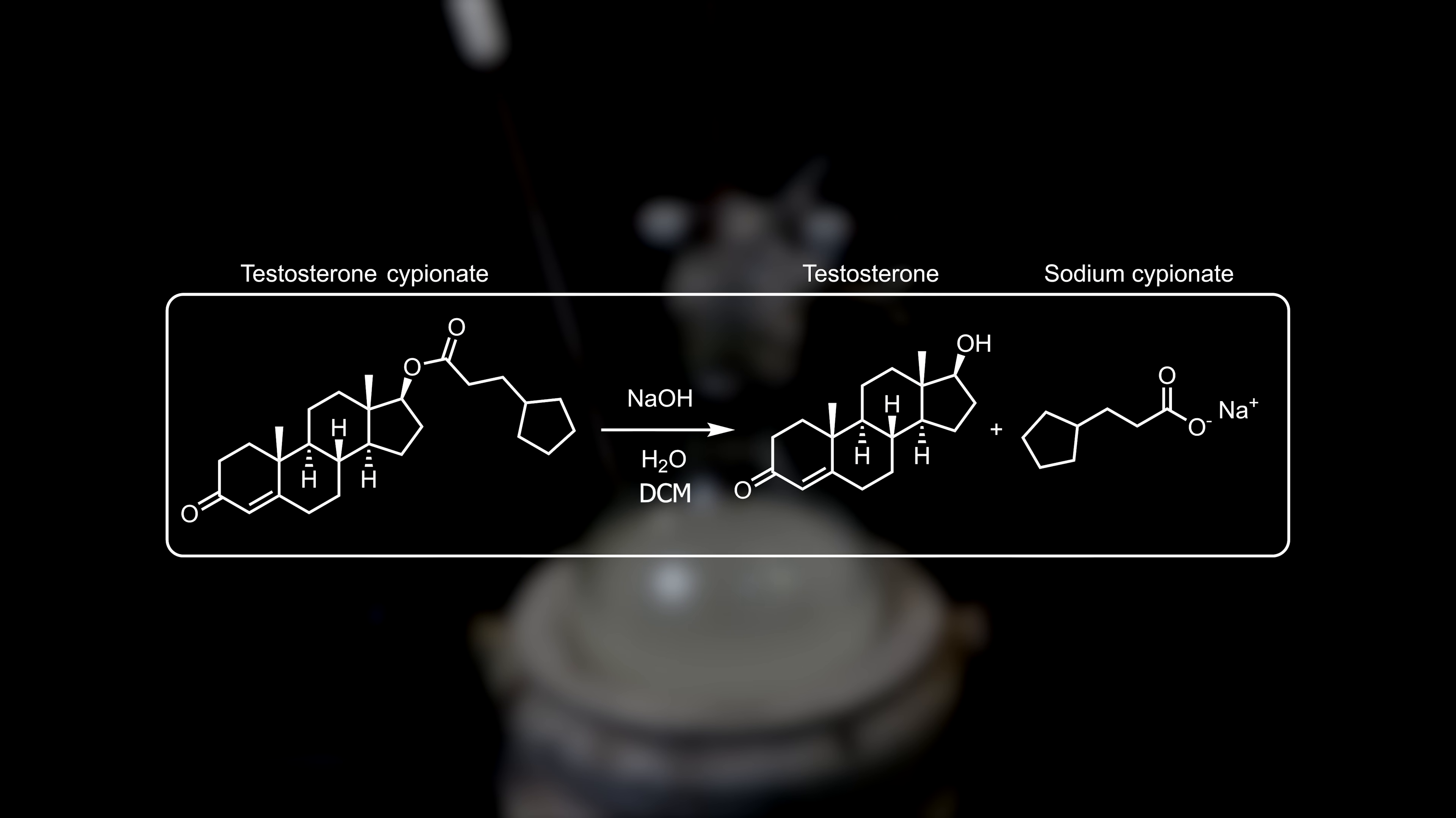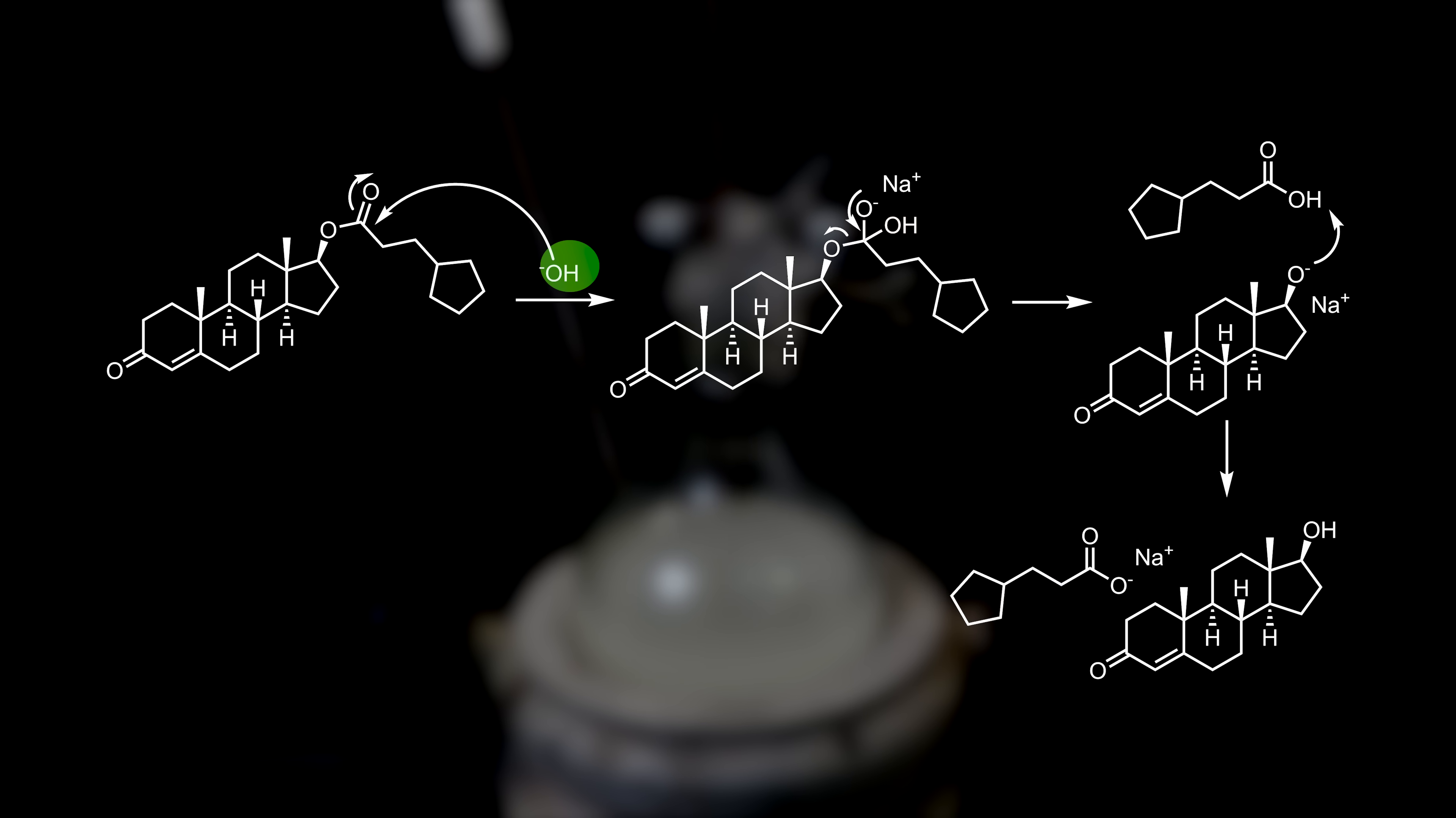This reaction is a typical basic ester hydrolysis, also called saponification. In this case, the cipionate ester is removed to give free testosterone, and the salt sodium cipionate. How it proceeds is first through nucleophilic attack of a hydroxyl, onto the ester's carbonyl carbon, moving a pair of the double bond electrons onto the oxygen.